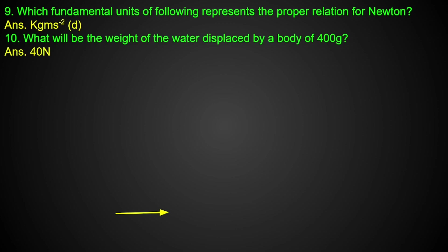What will be the weight of the water displaced by a body of 400 grams? The weight of the body is 400 grams, so the mass of the body is 400 grams. If you divide the weight by 10, the answer is 4 Newton.